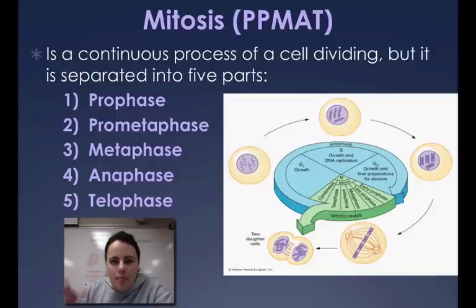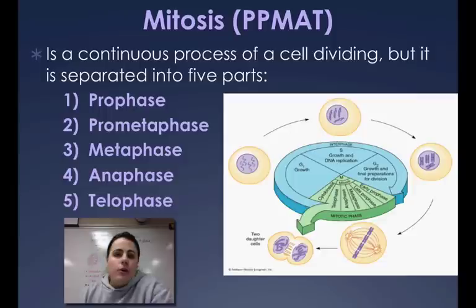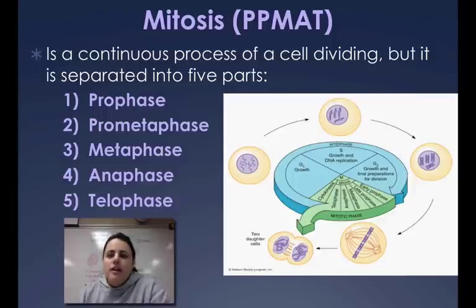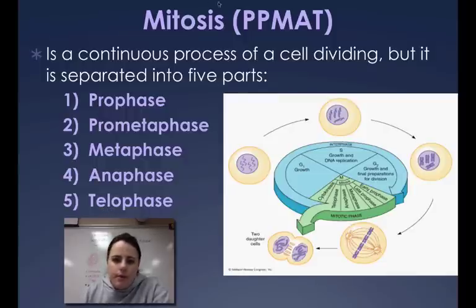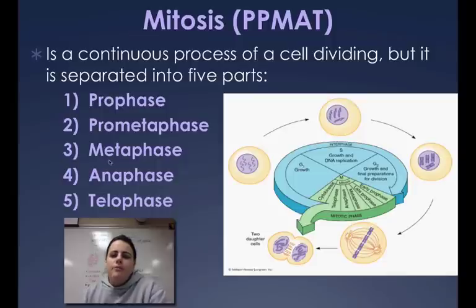We just talked about M-phase and how it's split up into two parts: mitosis and cytokinesis. What I want to talk about are the five stages of mitosis. They are abbreviated by their first letter: prophase, prometaphase, metaphase, anaphase, and telophase. You probably learned PMAT in middle school, but we have prometaphase as an in-between step between prophase and metaphase.